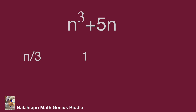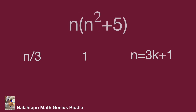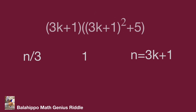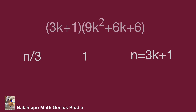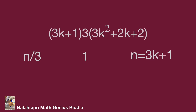When n divided by 3 has remainder 1, we define n equal to 3k plus 1. For easier calculation, rewrite n cubed plus 5n as n times (n² plus 5). Substituting n = 3k+1 gives (3k+1) times ((3k+1)² plus 5). Expanding: (3k+1)² plus 5 equals 9k² plus 6k plus 1 plus 5, which equals 9k² plus 6k plus 6. Factoring out 3 gives (3k+1) times 3 times (3k² plus 2k plus 2), so it is divisible by 3.